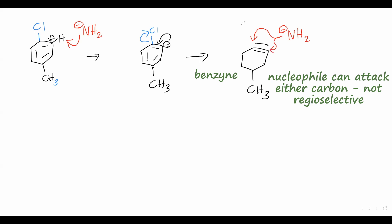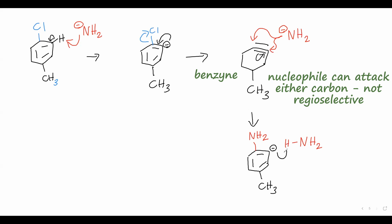If we choose the position para to the methyl group, the electrons of the amide attack that carbon, and one of the electron pairs in the triple bond comes over to form a lone pair on the adjacent carbon. This gives us an intermediate where the NH2 group is bonded to the ring, aromaticity is restored, and we have a negative formal charge on the adjacent carbon. We need to recover the hydrogen we lost earlier, so a molecule of ammonia comes in, that lone pair abstracts a hydrogen from ammonia, regenerating one equivalent of the amide anion and giving us para-methylaniline as one product. We also get meta-methylaniline if the benzyne was attacked at the other carbon of the triple bond.